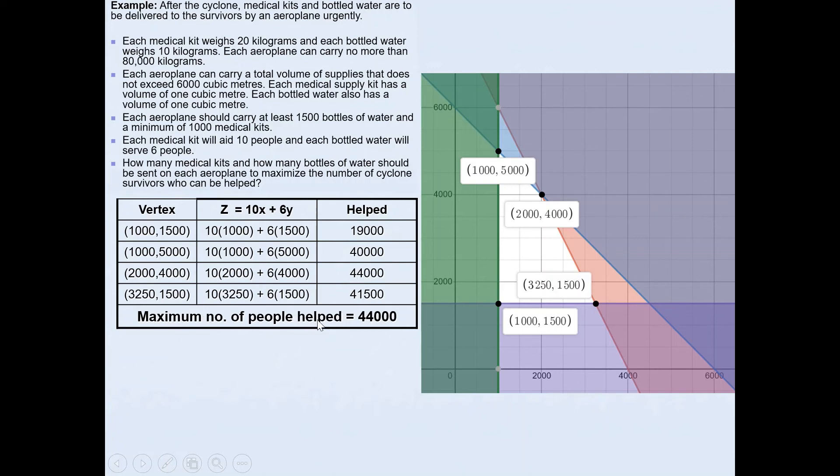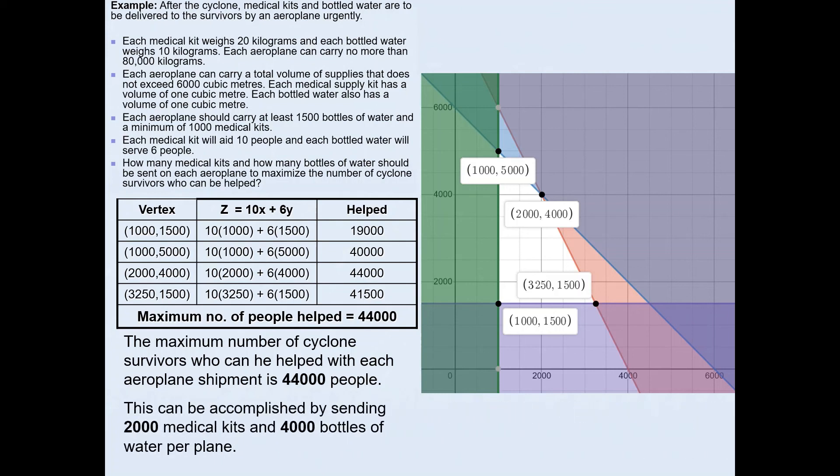The maximum number of people that can be helped is 44,000 people. We need to write the answer in context. So the maximum number of cyclone survivors who can be helped with each airplane shipment is 44,000 people. This can be accomplished by sending 2,000 medical kits and 4,000 bottles of water per airplane. Each airplane should be loaded as such to take 2,000 medical kits and 4,000 bottles of water in order to help maximum number of people.